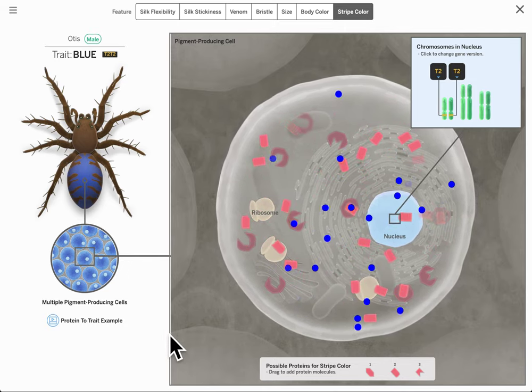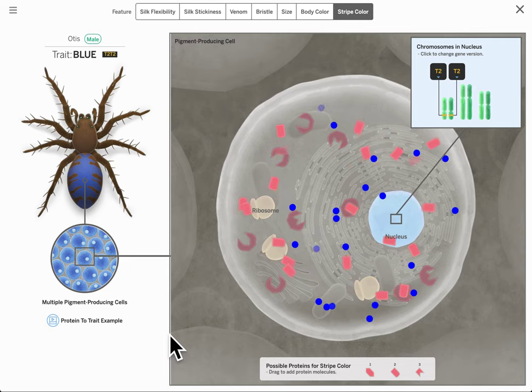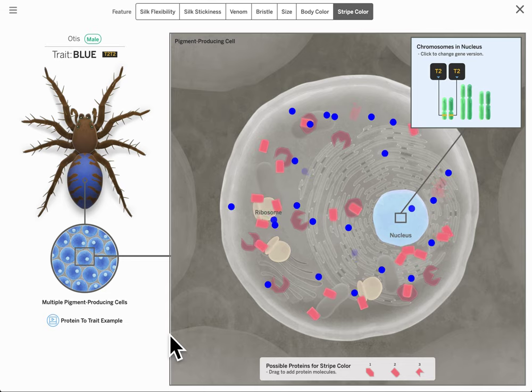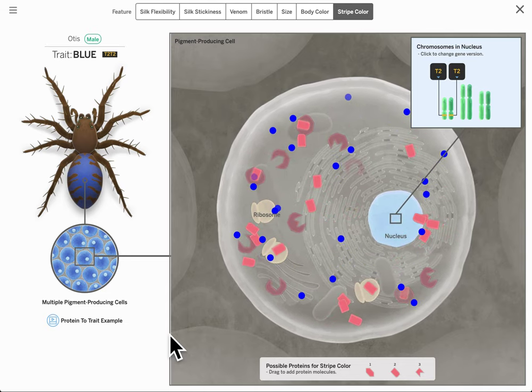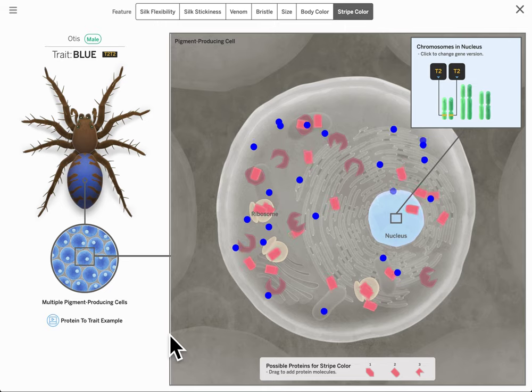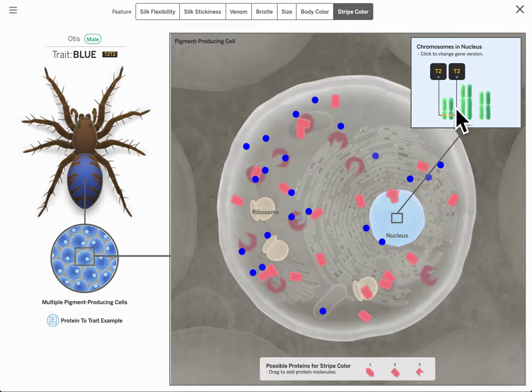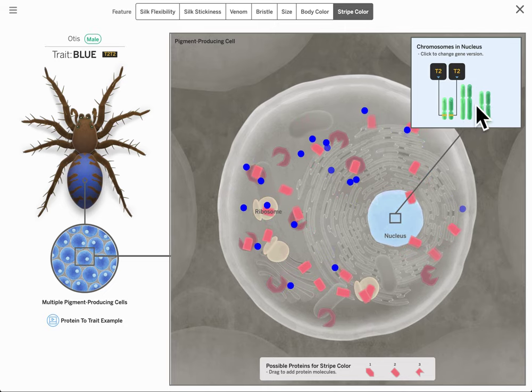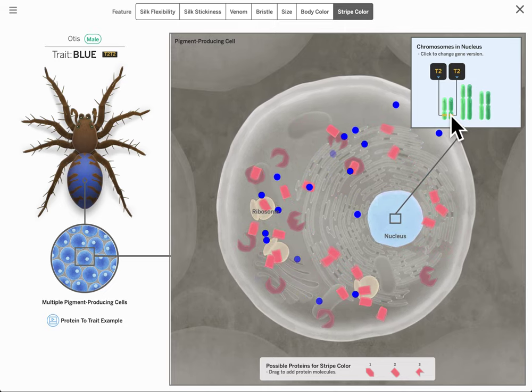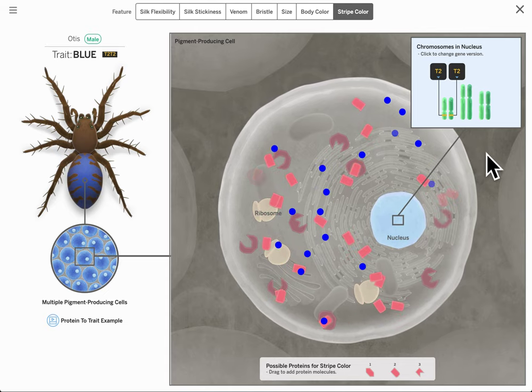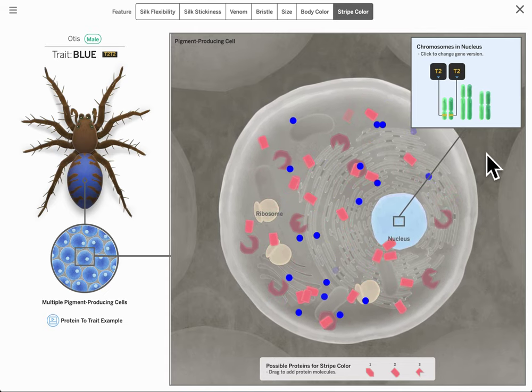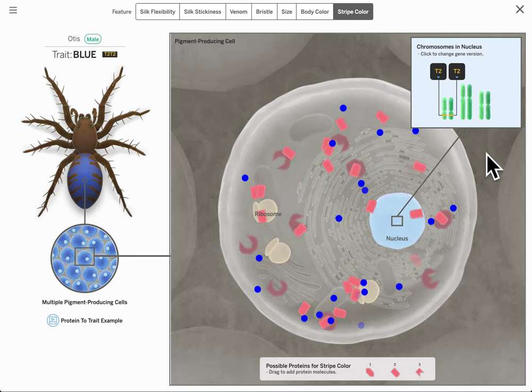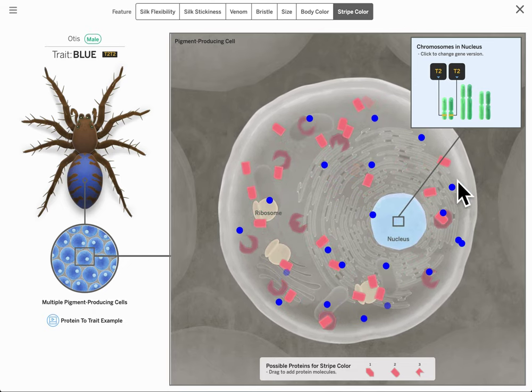This is how protein molecules lead to the blue stripe trait. Notice his genes - his genes are found on chromosomes and there are two copies for every gene. You can see those up here, so we have the chromosomes, these long rod-like structures, and then the genes are part of those chromosomes. This version of the gene gives the cells the instructions to make a protein molecule that leads to blue pigment.